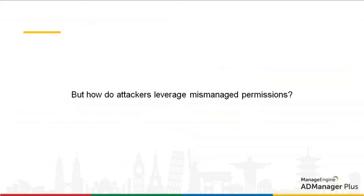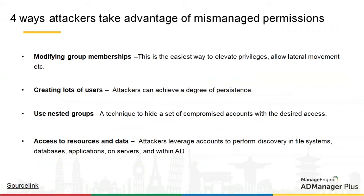Attackers leverage mismanaged permissions in several ways. Number one: modify group memberships. An attacker can simply add a backdoor user to an administrative or privileged group, giving that backdoor user access to critical resources. An attacker can also create invisible users — dynamic users with an entry TTL or time-to-live. The attacker adds this user to a domain administrator group, and once the TTL expires, the account is automatically removed from Active Directory with no logging in the event viewer.